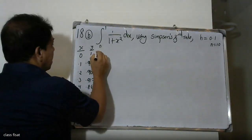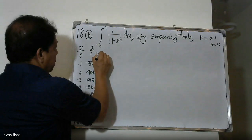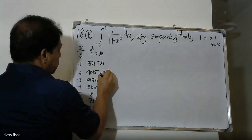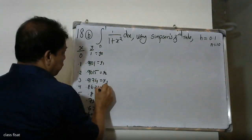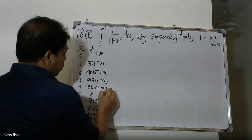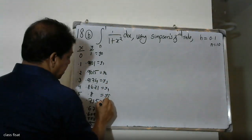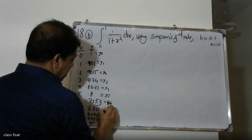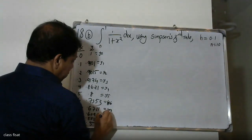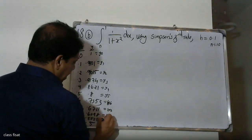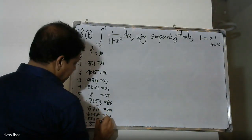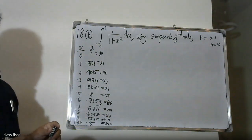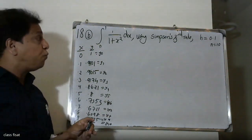We label the y values as y0, y1, y2, y3, y4, y5, y6, y7, y8, y9, y10 corresponding to the x values. This gives us a simple table to apply the formula.